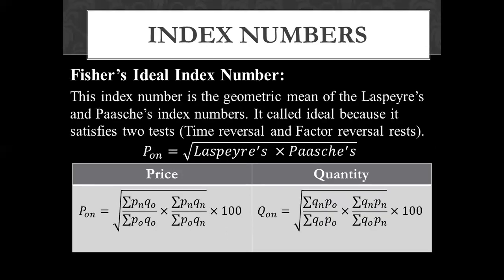Next we have Fisher's ideal index number. The formula is derived from the basic formula. The formula will be the square root of: summation of Pn times Q-naught over summation of P-naught times Q-naught, multiplied by summation of Pn times Qn over summation of P-naught times Qn, all multiplied by 100. This is the ideal index number formula.